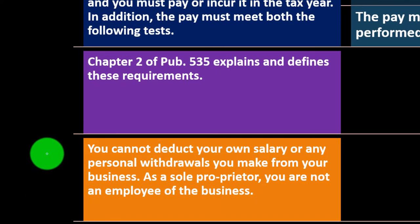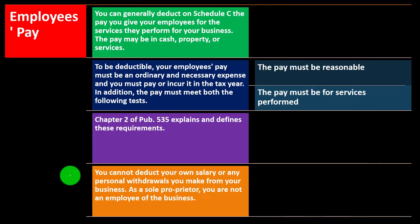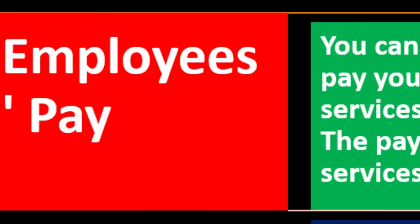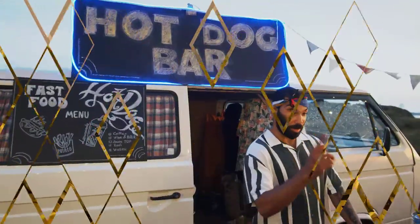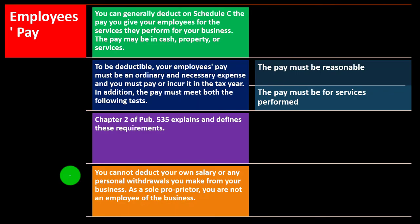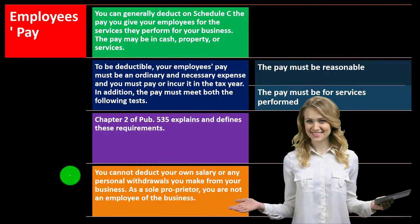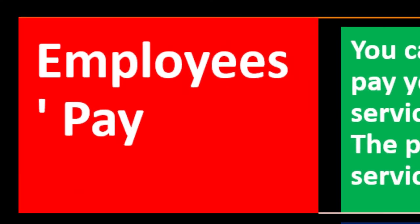You cannot deduct your own salary or any personal withdrawals you make from your business as a sole proprietor — you are not an employee of the business. This gets confusing because with self-employment tax they're treating you somewhat like an employee, but the distinction is that instead of payroll taxes you have the equivalent: self-employment tax. Small businesses may have an incentive to set up a different structure, like a limited liability company (a flow-through entity) or an S corporation, as opposed to a sole proprietorship reported on Schedule C.